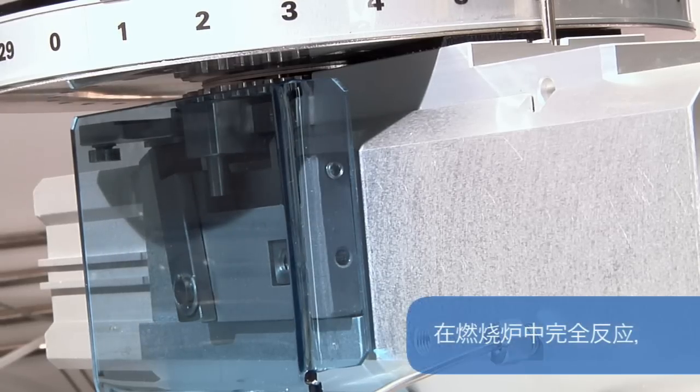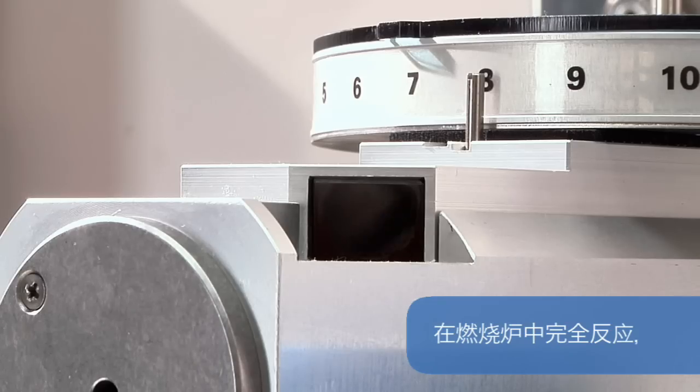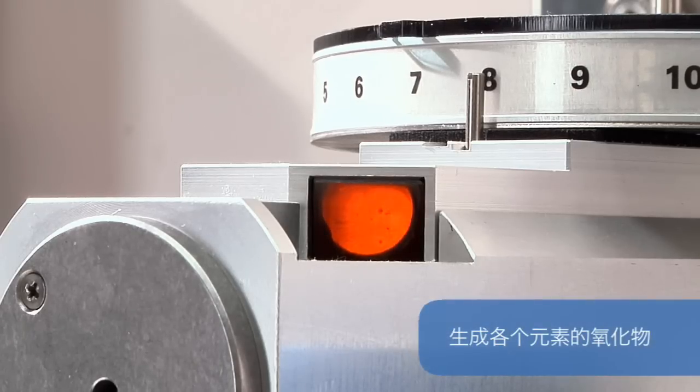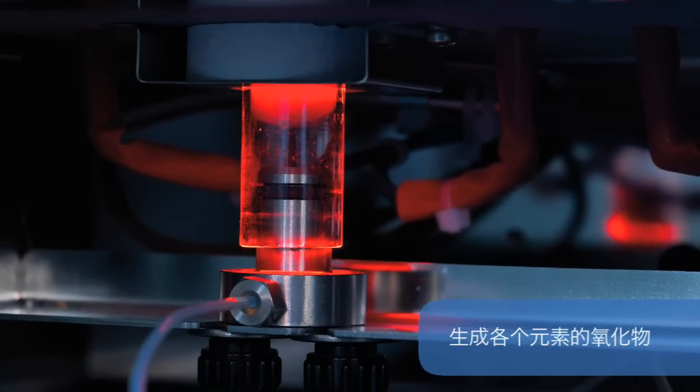The combustion reactor, filled with catalysts and in the presence of pure oxygen, ensures complete combustion. During the combustion at 1,030 degrees centigrade, the sample is decomposed into its elemental compounds such as carbon dioxide, water, and several nitrogen oxides.